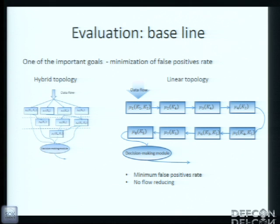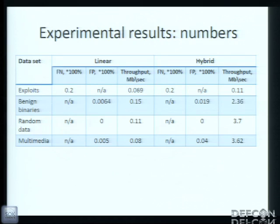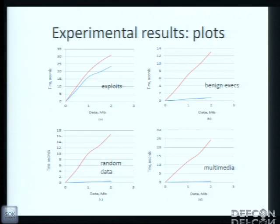As one of the important goals of that work was to minimize the false positive rate, we noticed that we could achieve such goal in simple linear topology when we execute one elementary classifier after another with no flow reducing. We compared hybrid topology with simple linear topology in four different datasets: exploit dataset, exploits generated by Metasploit framework, benign Windows and Linux binaries, random data, and multimedia. The red line stands for linear topology, blue line for hybrid topology. On some datasets, hybrid topology is more effective than linear by up to 45 times.